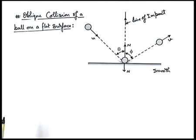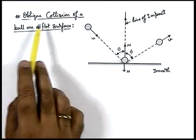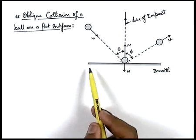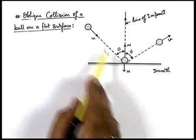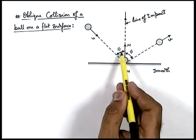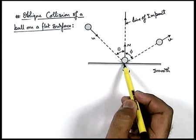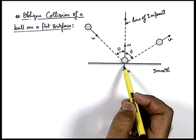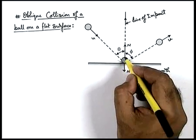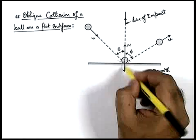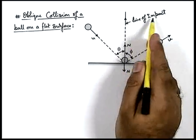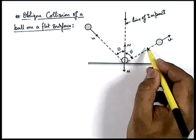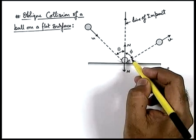Let's discuss the situation of oblique collision of a ball on a flat surface. We have a smooth surface on which a ball strikes at an angle of incidence theta. At the time of collision, deformation between the ball and floor will take place, and the contact force will act in a direction normal to the surface, which can be taken as the line of impact. After collision, the ball rebounds with a speed v at an angle phi.